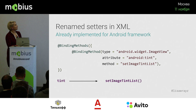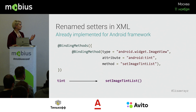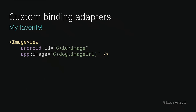Renamed setters are similar but have been done in the Android framework. For example, the `tint` attribute for `ImageView` actually refers to `setImageTintList`. That would not have worked out of the box, but Android has done it for you — these are included in the data binding library. And finally, custom binding adapters are really, I think, the best part. I was as excited for these when they were first announced as when I found out about Kotlin extension functions — they're kind of like extension functions for your XML.